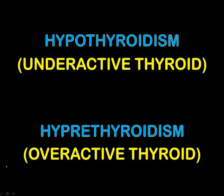The two main hormones produced by the thyroid gland associated with thyroidism are T3 and T4. T3 is triiodothyronine and T4 is tetraiodothyronine or thyroxine. When your gland is underfunctioning or underactive, or you are hypothyroid, the levels of T3 and T4 go down. Whereas, when your gland is overactive, the T3 and T4 levels go up.